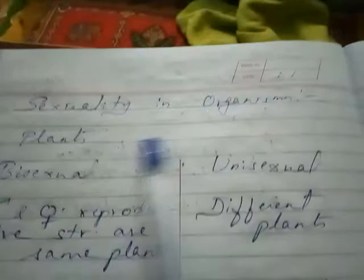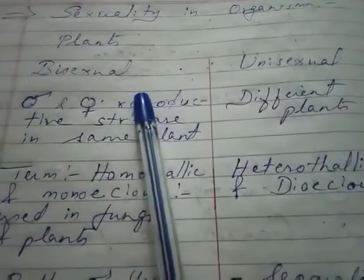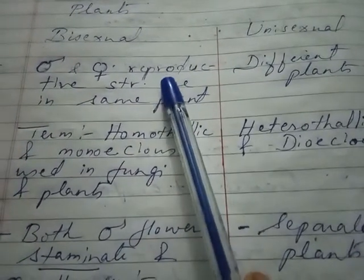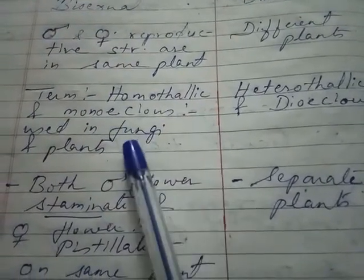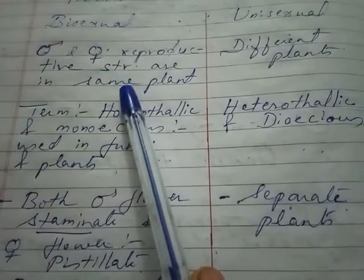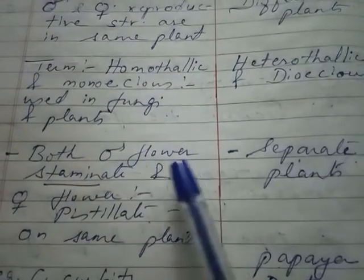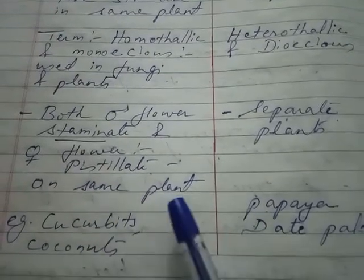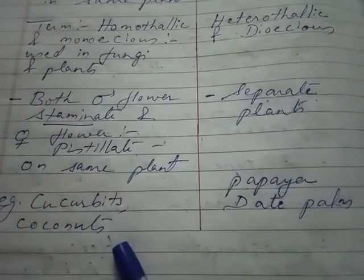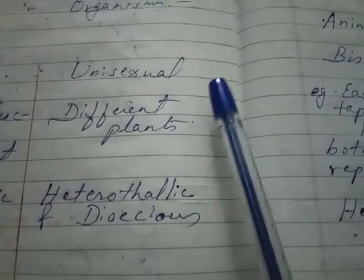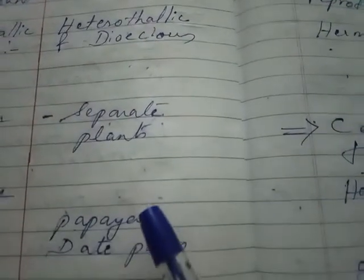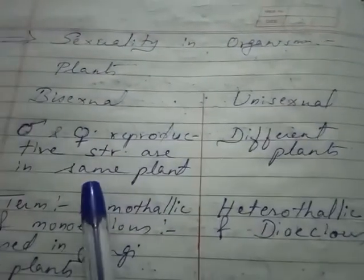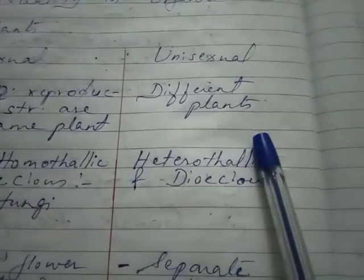Sexuality in organisms — in case of plants, they can be bisexual or unisexual. Bisexual plants have male and female reproductive structures on the same plant; the terms homothallic and monoecious are also used. Both staminate (male) and pistillate (female) flowers are on the same plant, for example cucurbits and coconut. In unisexual plants, male and female flowers are on different plants; they are called heterothallic and dioecious, for example papaya and date palm.